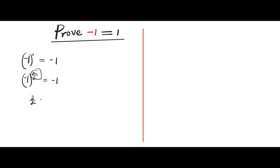2 over 2 equals 1. So if I replace 2 over 2 with 1, I'm still going to get negative 1. So negative 1 raised to the power of 2 over 2 equals negative 1. That being said,